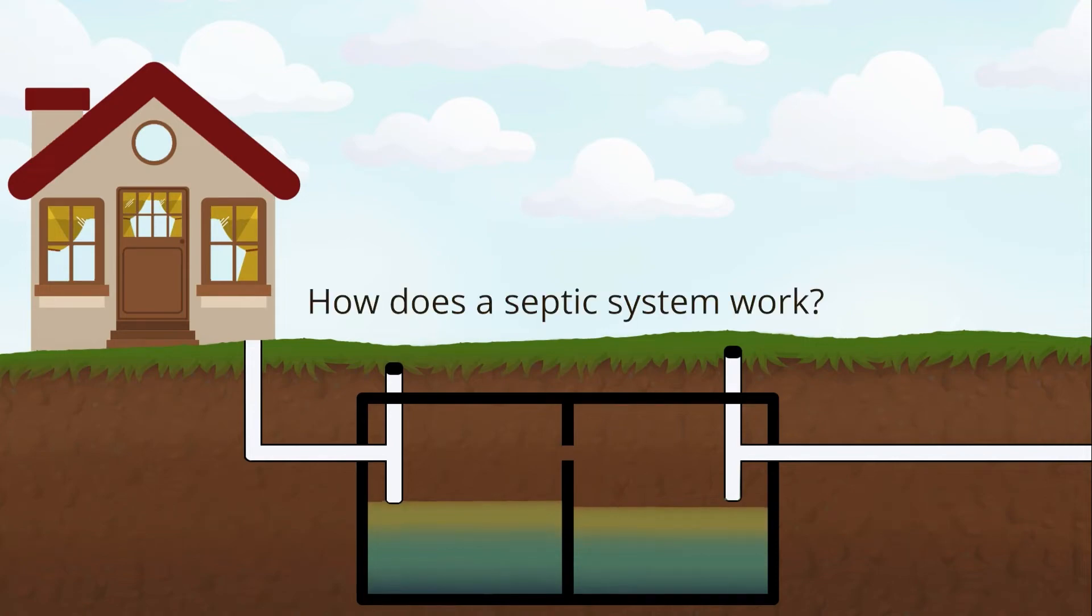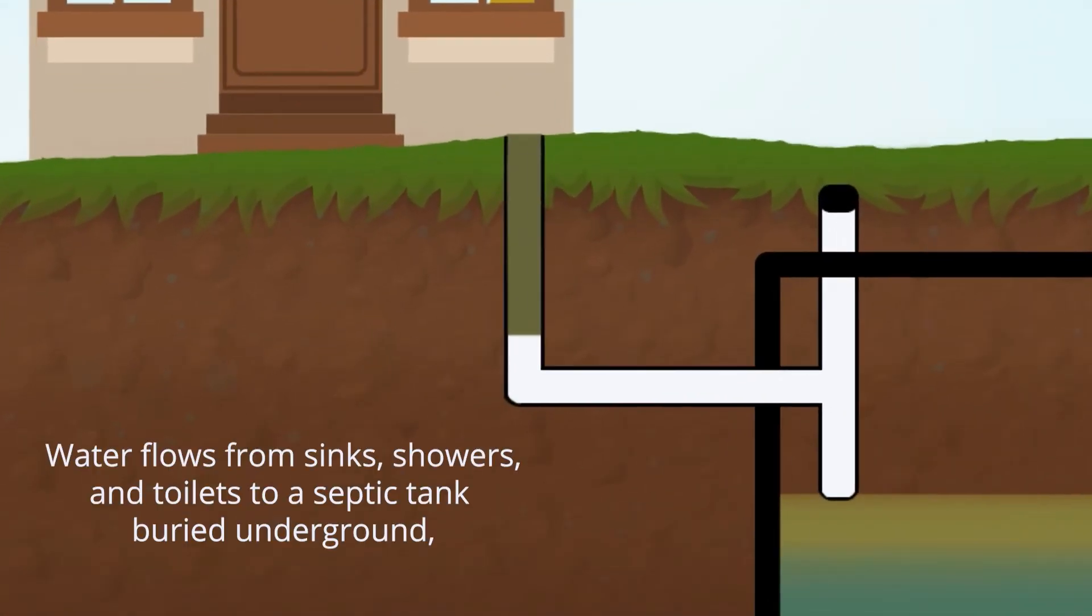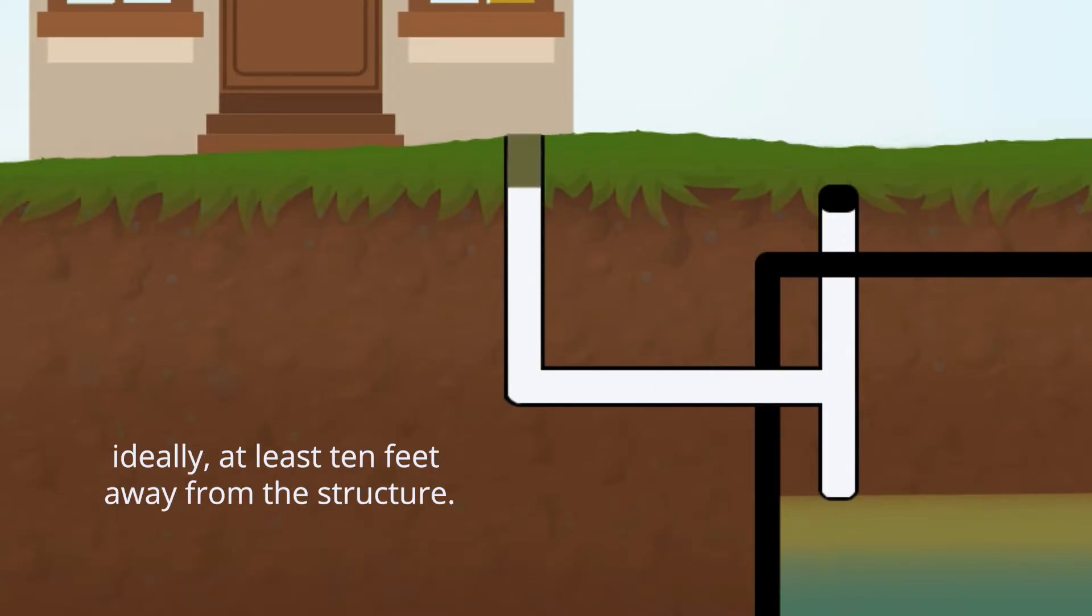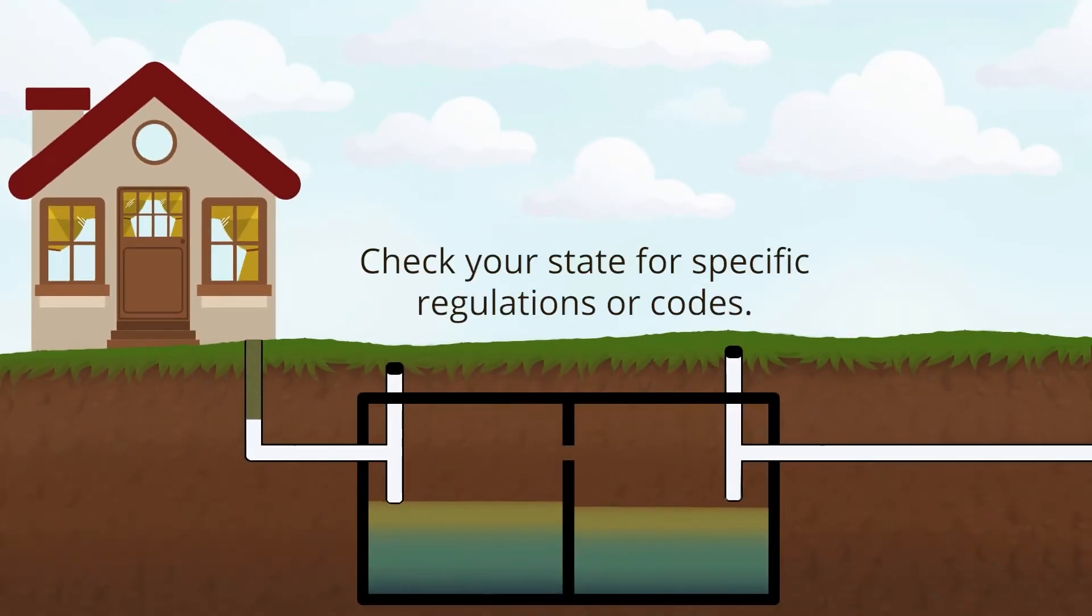How does a septic system work? Water flows from sinks, showers, and toilets to a septic tank buried underground, ideally at least 10 feet away from the structure. Check your state for specific regulations or codes.